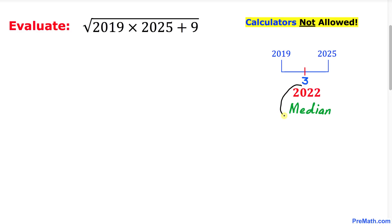Thus 2022 turns out to be the median of these two given numbers. Let's go ahead and manipulate our given problem. Let's focus on this number 2019. This could be written as 2022, the number I got from here, and then I'm going to subtract three.